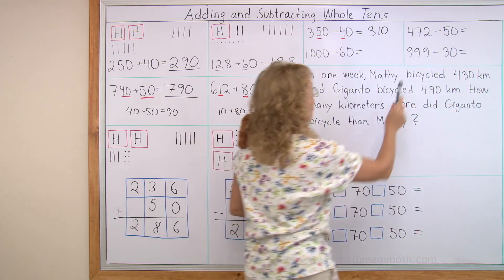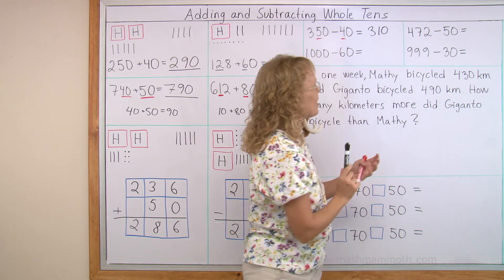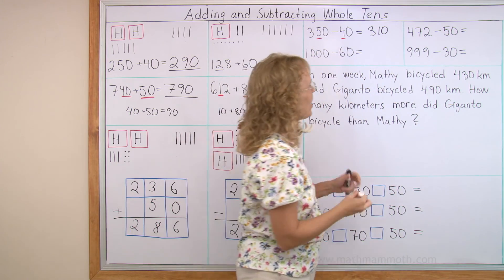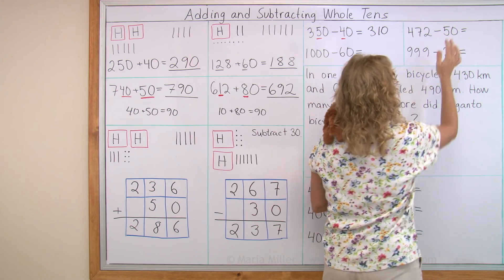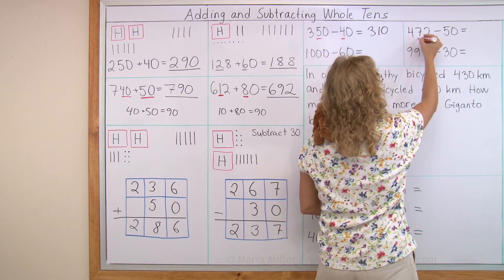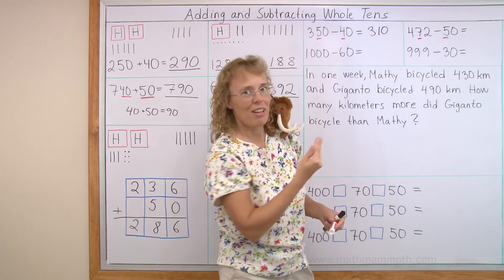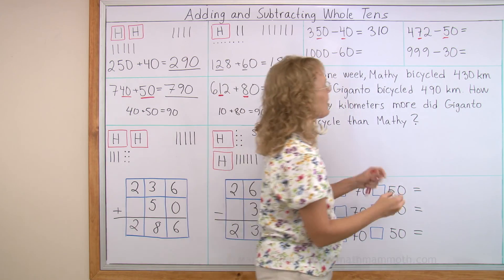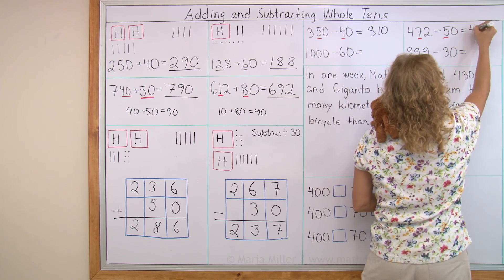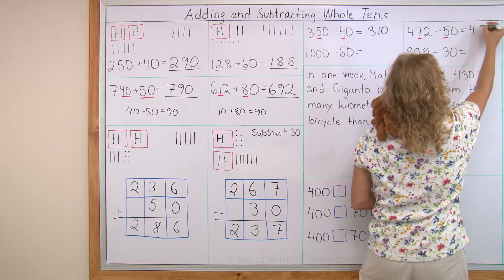Next, I'm going to do this one, 472 minus 50. Again we are subtracting whole tens here, five tens. So look over here at the tens digit, the tens, seven tens minus five tens, two tens, right? Nothing else changes, there's 400, and the two, and two tens.